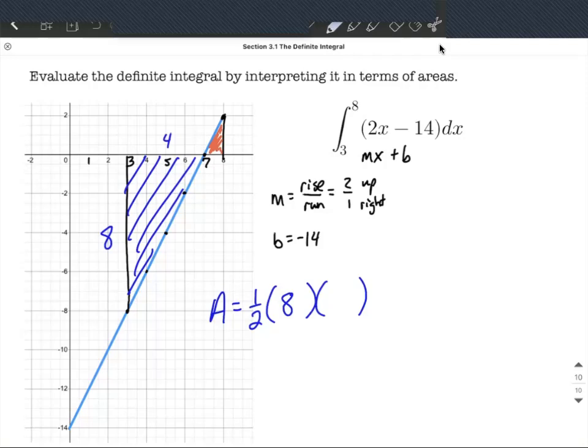So that's going to be 1 half times 8 times 4 should work out to be 16. But in terms of that's the area of the triangle, we're going to have to treat it as a negative 16 because it was below the x-axis.